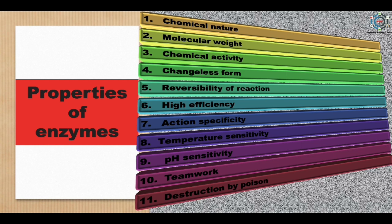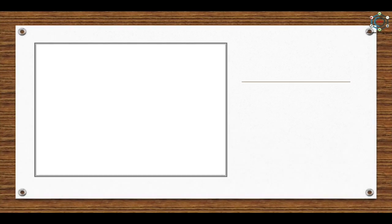Further properties: Action specificity — an enzyme can catalyze only a particular type of reaction or may act on a particular substrate only. Temperature sensitivity — enzymes are heat sensitive. pH sensitivity — enzymes show maximum activity at an optimum pH of six to eight. Team work — they work in the cell as a team, where the product of one enzyme-controlled reaction serves as the substrate for the next. Destruction by poison — they are destroyed by poisons like cyanide and iodoacetic acid.